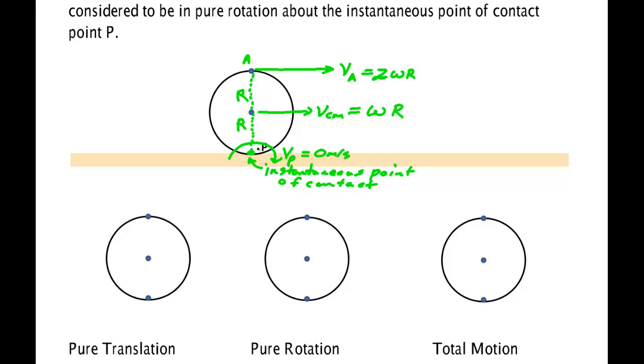But any motion, including this, can be thought of as pure translation of the center of mass. What does that mean? Everything on the ball is moving with the velocity of the center of mass. So that would be Omega R. So pure translation of the center of mass.